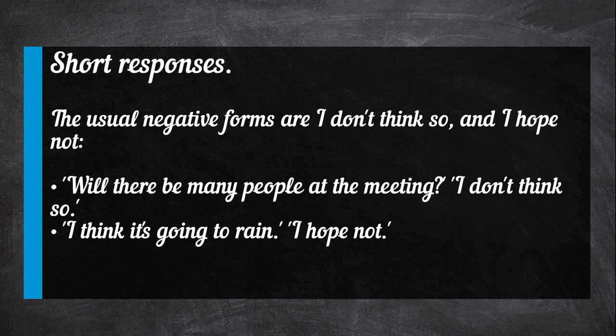The usual negative forms are I don't think so and I hope not. For example: Will there be many people at the meeting? I don't think so. And: I think it's going to rain. I hope not.